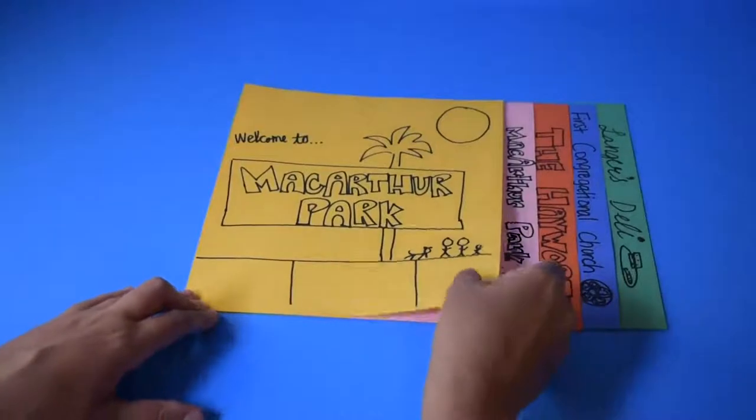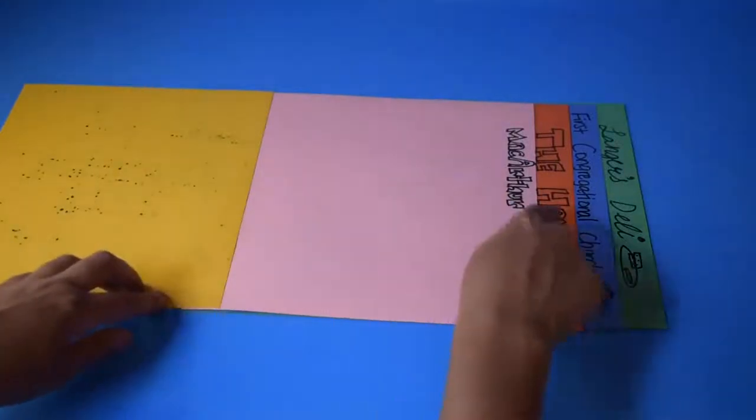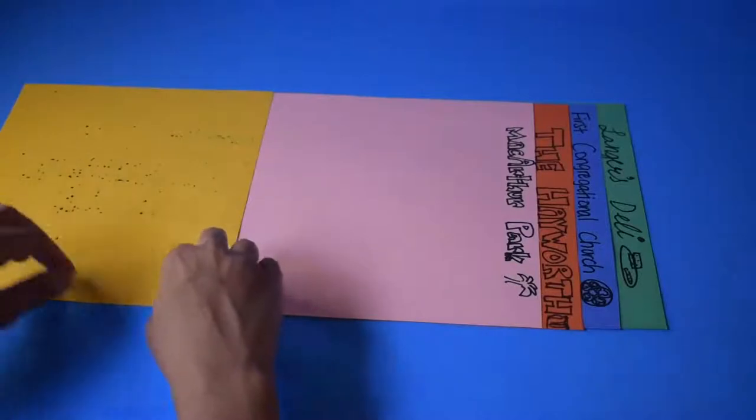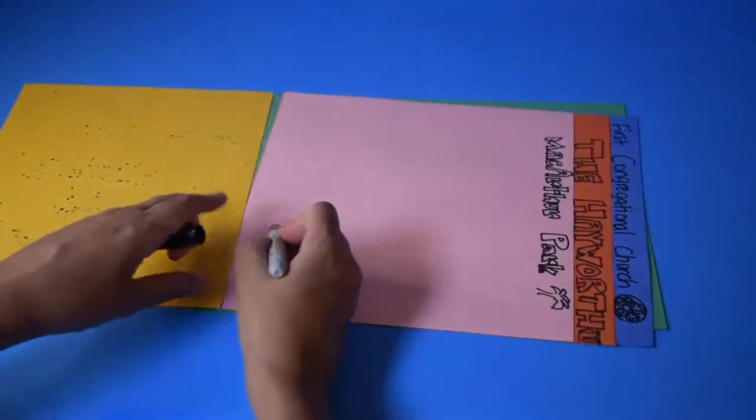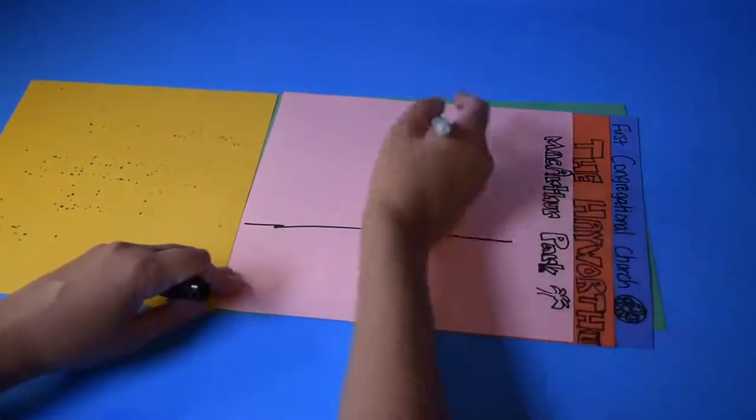Next, let's begin working on the inside. The first page will showcase the history of your neighborhood and the following pages will be about each of the places you're including in your book. There will be a section on each page for the short description of the place and a space for the drawing.